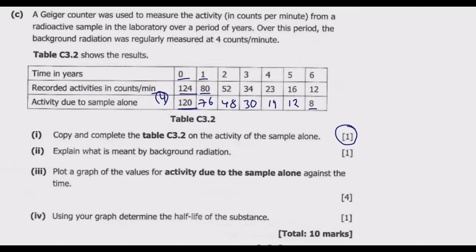Question C part 2: Explain what is meant by background radiation. Background radiation refers to radioactive radiation — such as alpha, beta, and gamma — to which we are all exposed even in the absence of visible radioactive sources. These come from sources such as cosmic rays from outer space and ultraviolet from the sun. Other major sources include natural materials such as health products, building materials, and food.